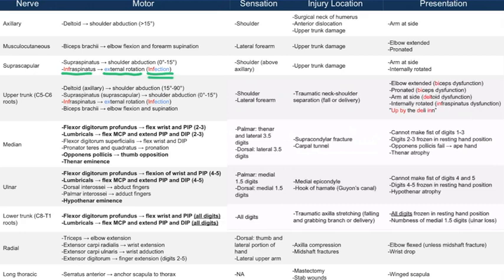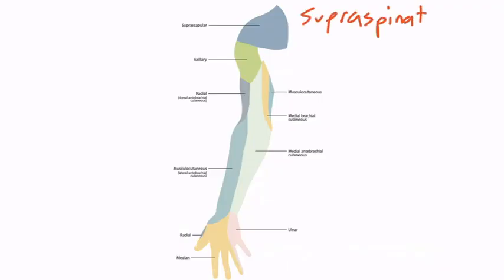This nerve's function can be damaged with anything that damages the upper trunk. If the supraspinatus muscle doesn't work, the patient can't abduct from 0 to 15 degrees, so the arm will be at the side — very similar to an axillary nerve injury. If the infraspinatus muscle doesn't function, the arm will not be able to externally rotate, so remember: infection — infraspinatus, external rotation. If you can't do it, you will be internally rotated. The suprascapular nerve covers the area just above the axillary nerve's territory, high on the shoulder, so damage causes sensation loss in that region.